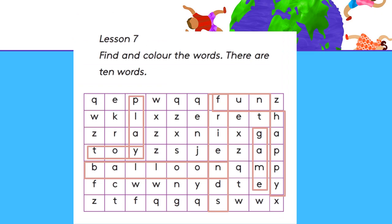Lesson 7: Find and Color the Words. There are 10 words to find. Words include: play, toy, balloon, friends, game, happy, fun, ball. You can find more words and color them. This is a workbook activity — do it in your workbook.